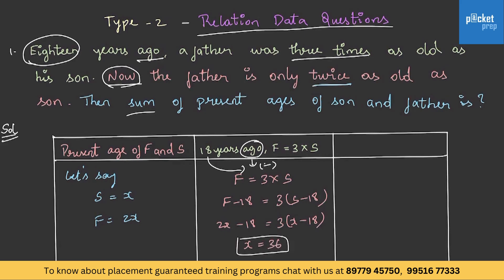In the final column, the question asks for the sum of present ages of son and father. So x plus 2x equals 36 plus 72, giving 108. This is the sum of ages of son and father.